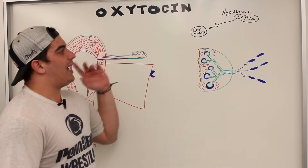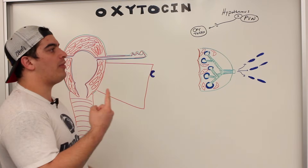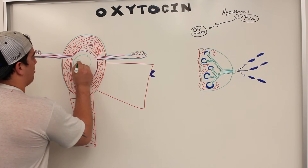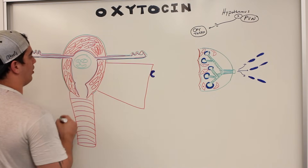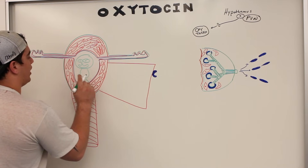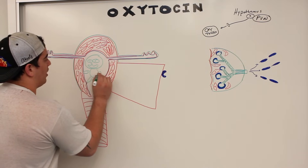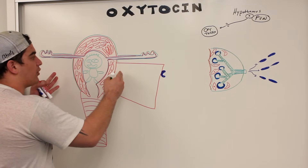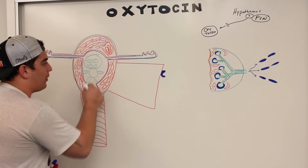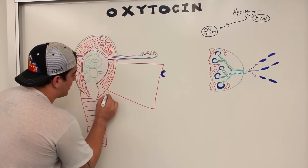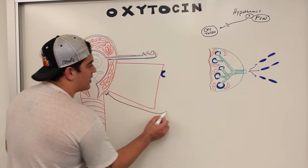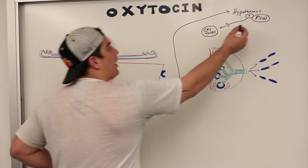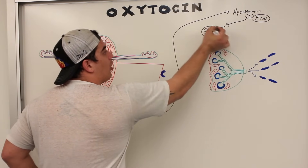So oxytocin, when it's actually released, what are the things that are stimulating it? One thing is the birthing process. So let's say here I have a baby that's ready to come out into the world. It starts to stretch the actual cervix of the uterus, activating specific stretch receptors located within certain layers of the uterus. That stretch receptor is going to send signals to the hypothalamus, which will then activate the paraventricular nucleus to secrete the already preformed oxytocin.